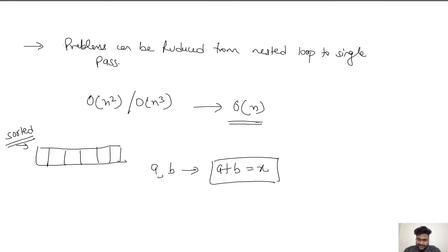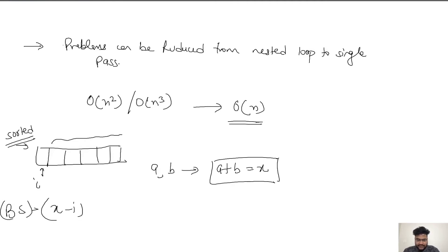If we look at the brute force approach, we pick one element and traverse through the rest of the array to find whether adding it to any other value results in X. Alternatively, we could apply binary search: for a value at index i, compute X minus i and binary search for that in the remaining array. But this can also be solved by two pointer. This is an example of a problem that looks like O(n²) but is solvable in linear time.